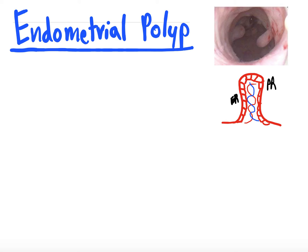I previously made a video on abnormal uterine bleeding, and part of that video was the differential diagnosis of PALM-COEIN. I'll link that video here if you want to take a peek. The subsequent videos are going to be on each part of that differential diagnosis, the P in PALM being polyp for endometrial polyp. Endometrial polyps are a cause of abnormal uterine bleeding, and we're going to focus in on that for this video.